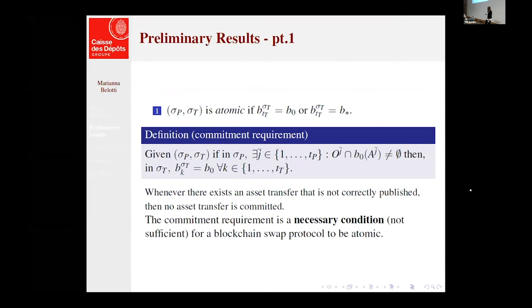So preliminary results: we were able to formalize the concept of commitment requirements. So the fact that we can have a transfer, a commitment, only if the publishing phase has been instituted in a correct manner. And of course, commitment requirement is an accessory condition for blockchain swap to be atomic.